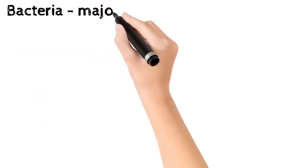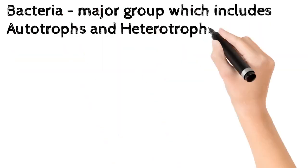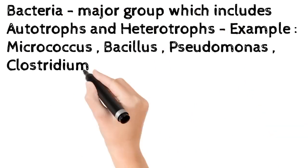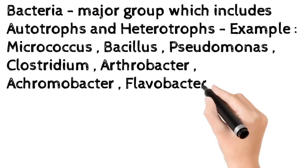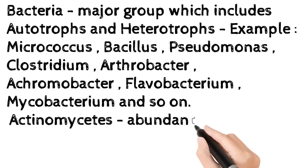Bacteria are the major group, which includes autotrophs and heterotrophs. Examples include: Micrococcus, Bacillus, Pseudomonas, Clostridium, Arthrobacter, Achromobacter, Flavobacterium, Mycobacterium, and so on.